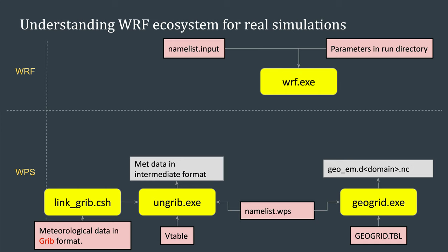You need to check that you are using the correct Vtable file before running ungrib.exe. Once you have run ungrib.exe, you get your meteorological data still on the original grid and original vertical levels — it is simply in another file format, the intermediate format.